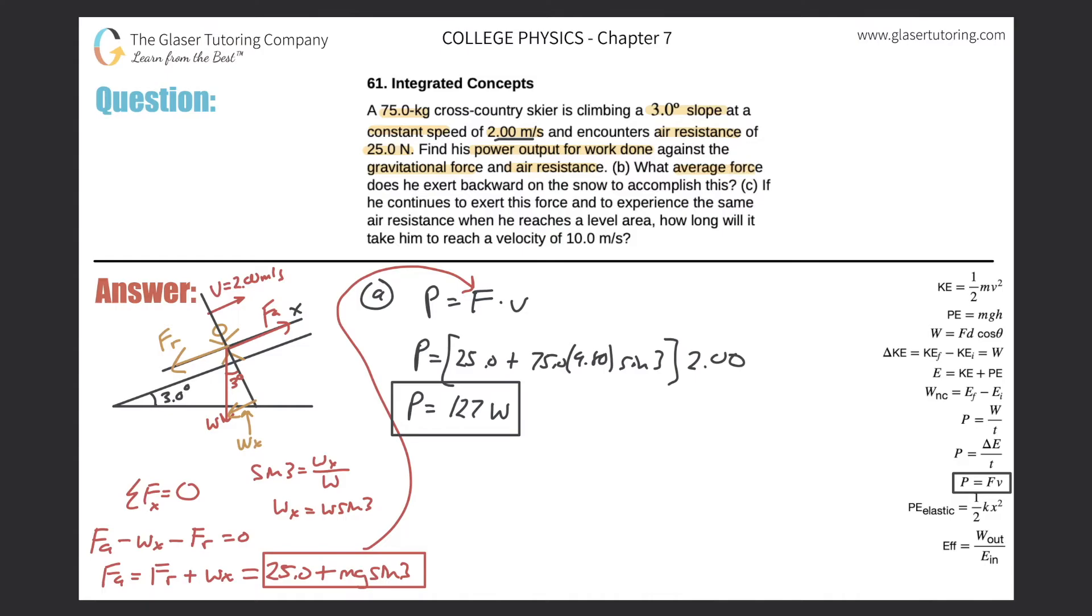So let's take a look at letter B. So what average force does he exert backward on the snow to accomplish this? Well, basically, remember Newton's third law, that the applied force here is really coming from the snow pushing back on him.